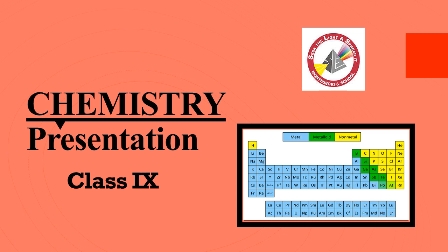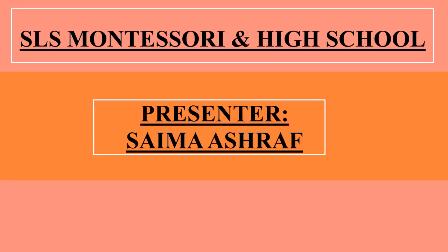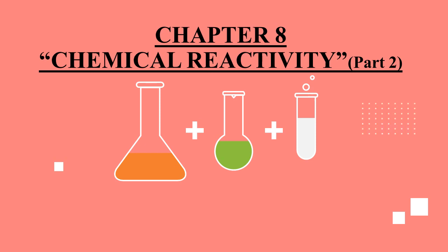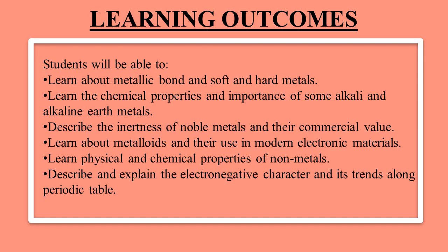Asalamu alaikum students, this is your chemistry class and I'm your teacher Saima Ashraf. In this part you are going to learn further topics of chapter 8: chemical reactivity. Topics include the metallic bond, soft and hard metals, chemical properties and importance of some alkali and alkaline earth metals, inertness of noble metals, commercial value of metalloids, use in modern electronic materials, and physical and chemical properties of non-metals, electronegative character, and trends along the periodic table.